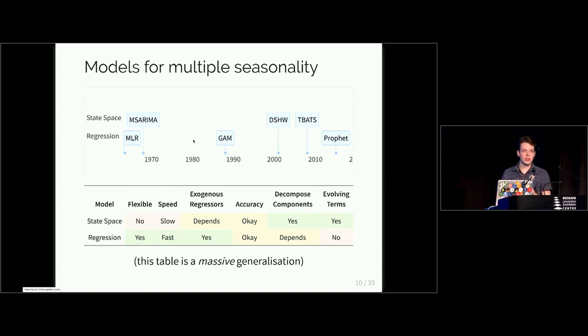And there's advantages and disadvantages of both. The state space models because it needs to filter through the whole data set sequentially they tend to be quite slow. And the current implementations are inflexible as well. You just take the model probably some automatic procedure will go through and choose a model appropriate for you. You don't have as much control as I'd like to have when forecasting.